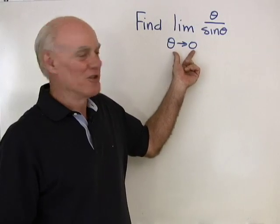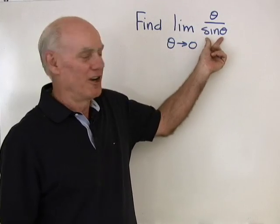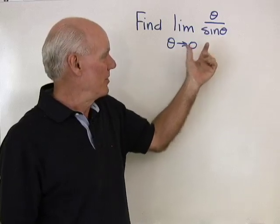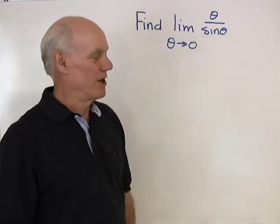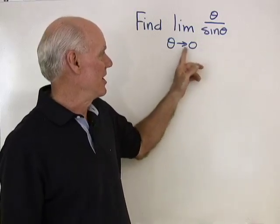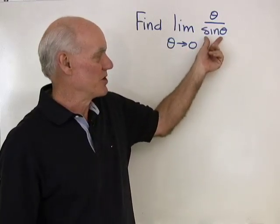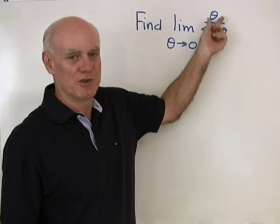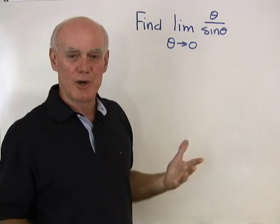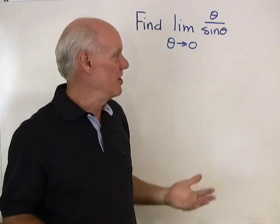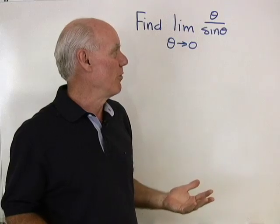We want to find the limit as theta goes to zero of theta over sine theta. We can't evaluate it directly because as theta goes to zero, sine theta goes to zero and theta goes to zero. So we end up with zero over zero, which is an indeterminate form.